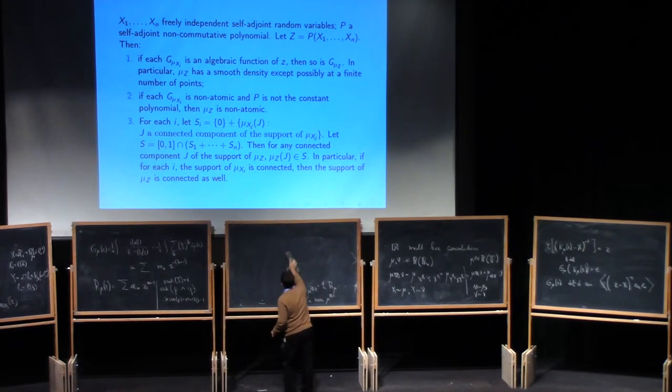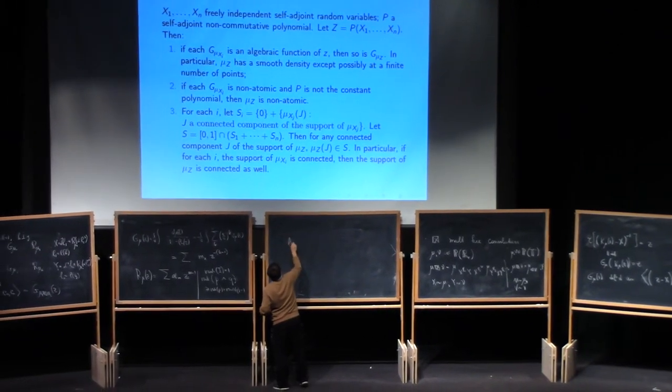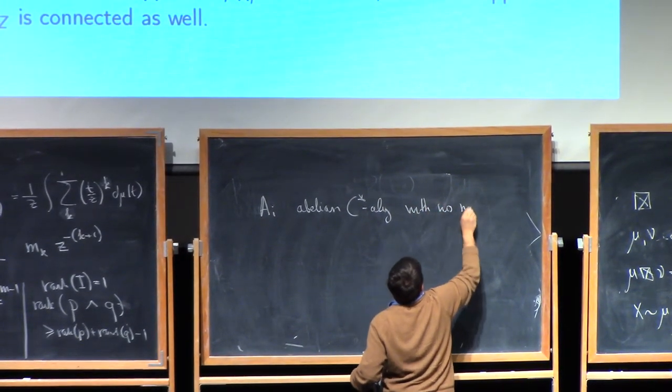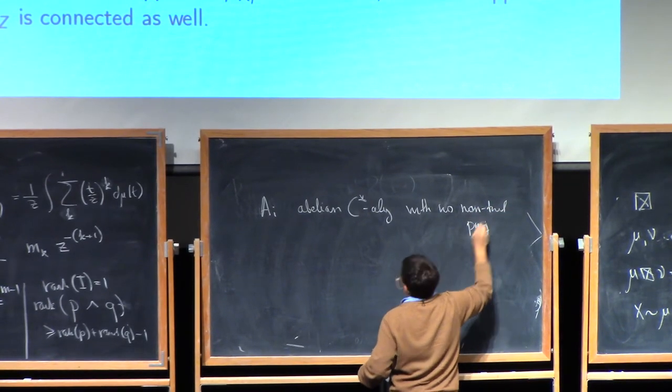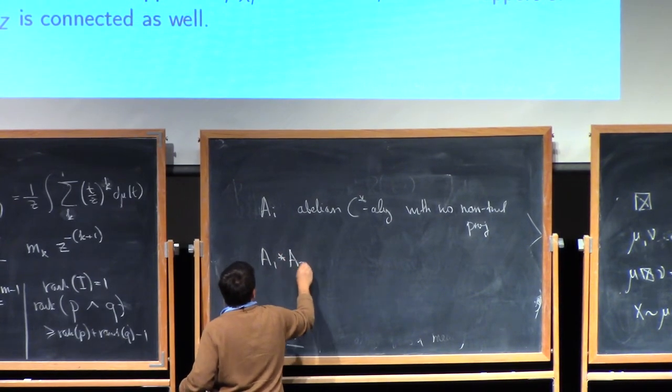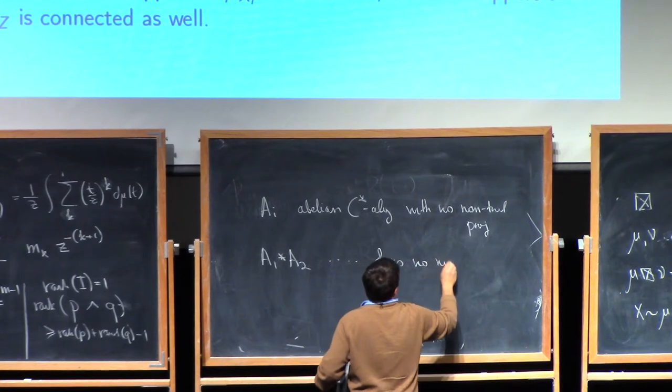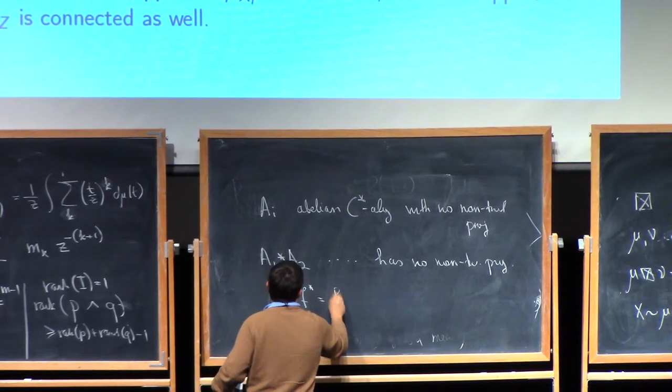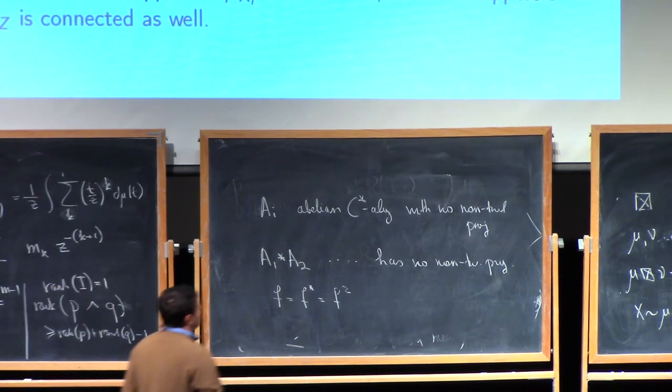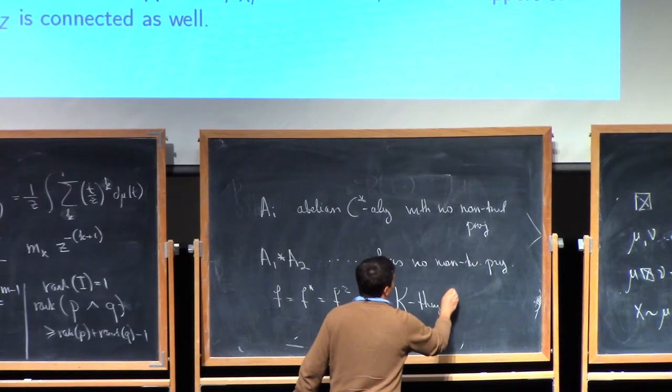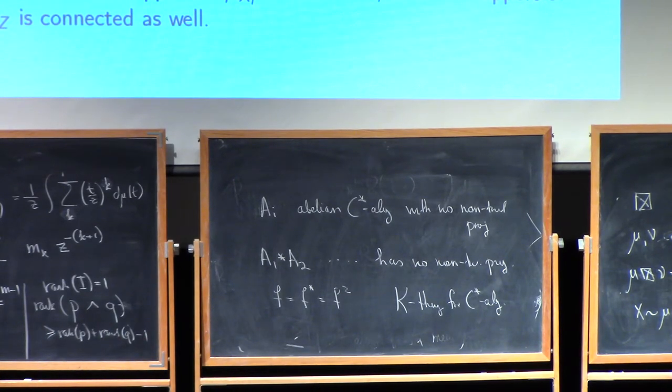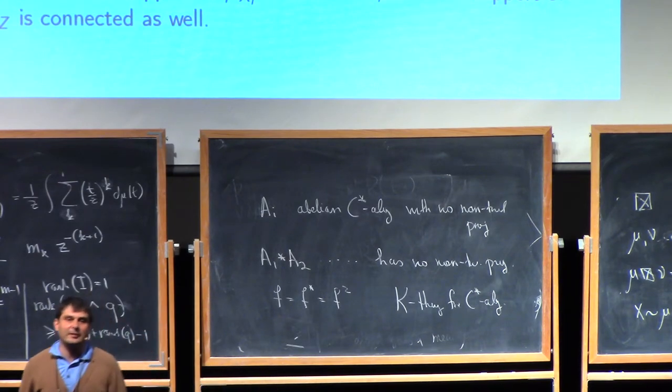And this is a very nice statement. It follows from the fact that if you take AI, a B and C star algebras, with no projections, no non-trivial projections, then their free product has no non-trivial projections. So, projection is simply an element F, which is self-adjoint and is idempotent. And this is a result in something called K theory, topological K theory, for C star algebras. And I don't know of another way of proving this, again, besides appealing to those kinds of high-power results. So, somehow it says that this free product keeps topological spaces connected, whatever that means.